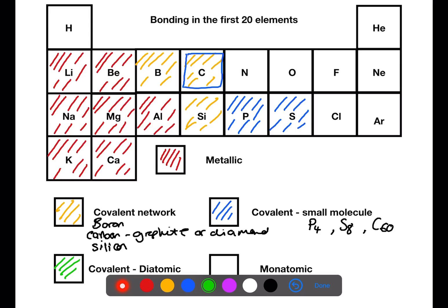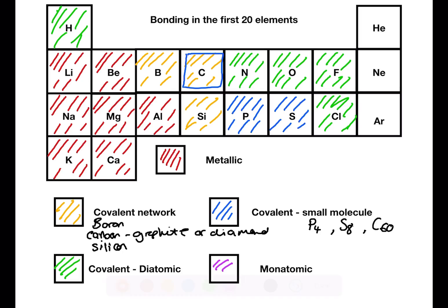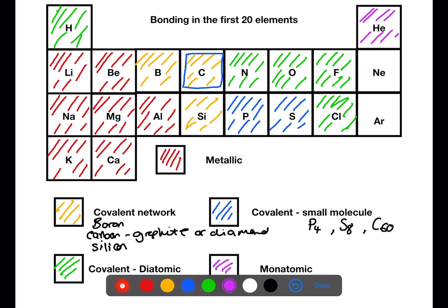Covalent diatomic molecules. We have nitrogen, oxygen, fluorine, chlorine and hydrogen. And then finally the monatomic gases. Helium, neon and argon.